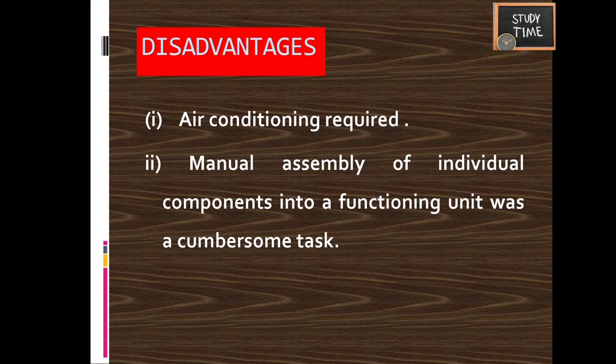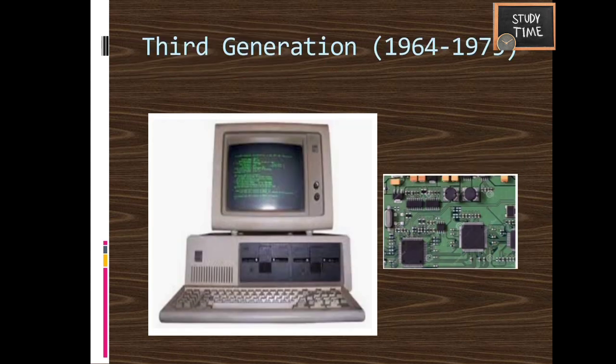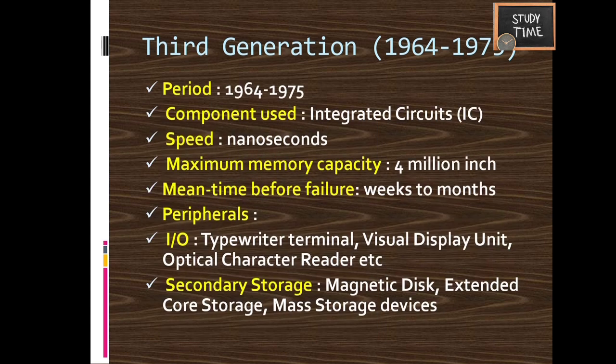Third generation computers used integrated circuits or IC chips, in which many transistors, resistors, capacitors, and other components are integrated and paired together onto a very small surface of silicon known as a chip. This new micro-electronic technology was called integrated circuits, or IC chips.